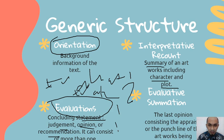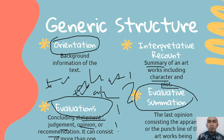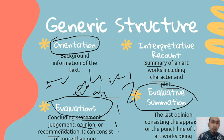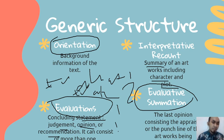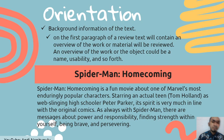The last generic structure is evaluative submission. In this part, in the last paragraph, you put the appraisal or the punchline of the artwork. Now let's take a look at some examples and analyze them.